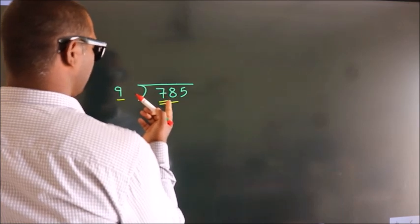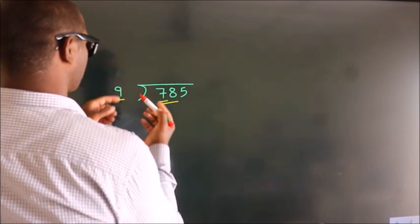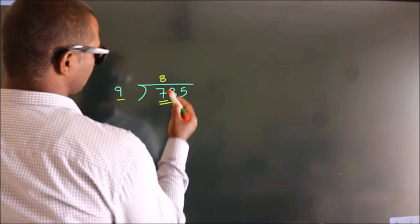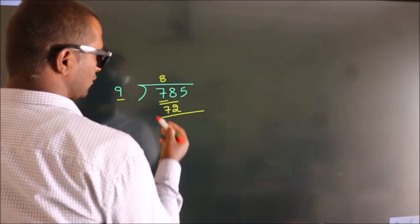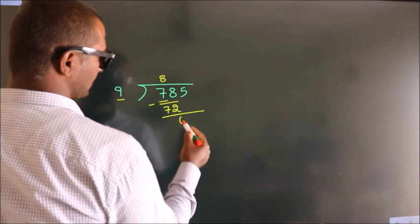A number close to 78 in the 9 table is 9 times 8, which is 72. Now we subtract and we get 6.